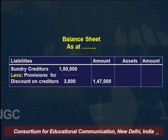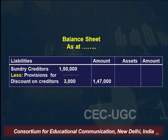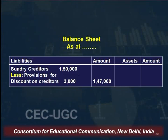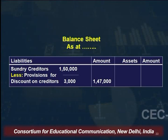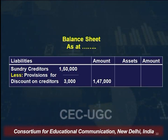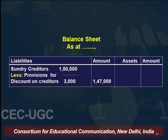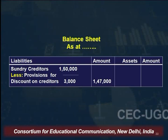In the balance sheet, since provision for discount on creditors is related to creditors shown on the liability side, it will be deducted from the list of creditors. Total creditors were Rs. 1,50,000; provision for discount on creditors calculated at 2% comes to Rs. 3,000; so the net amount is Rs. 1,47,000. This is the amount we need to pay to our creditors and it is shown in the outer column of the balance sheet.